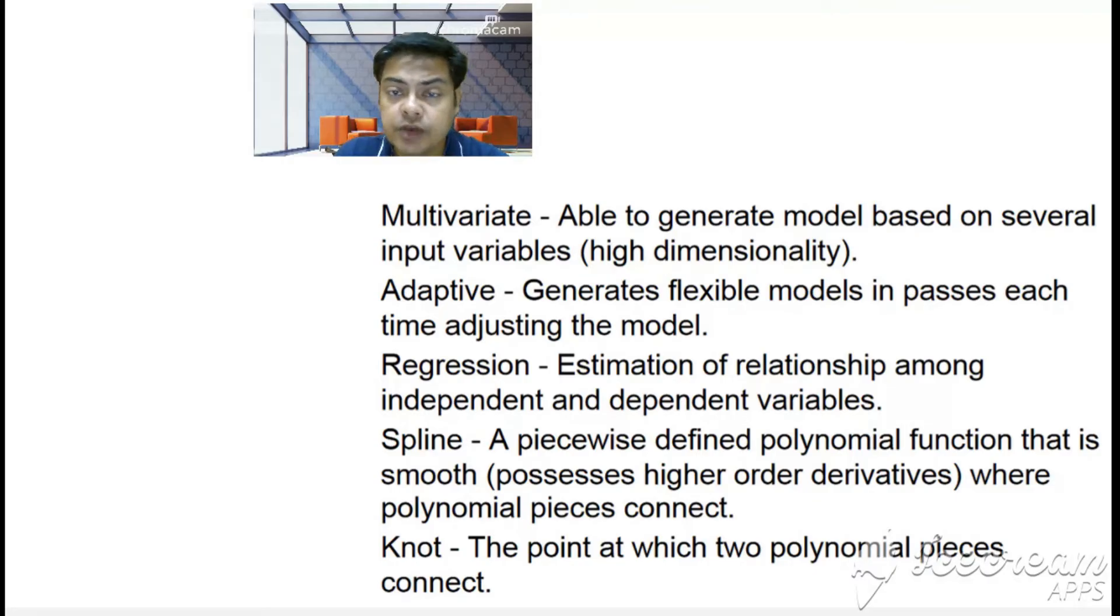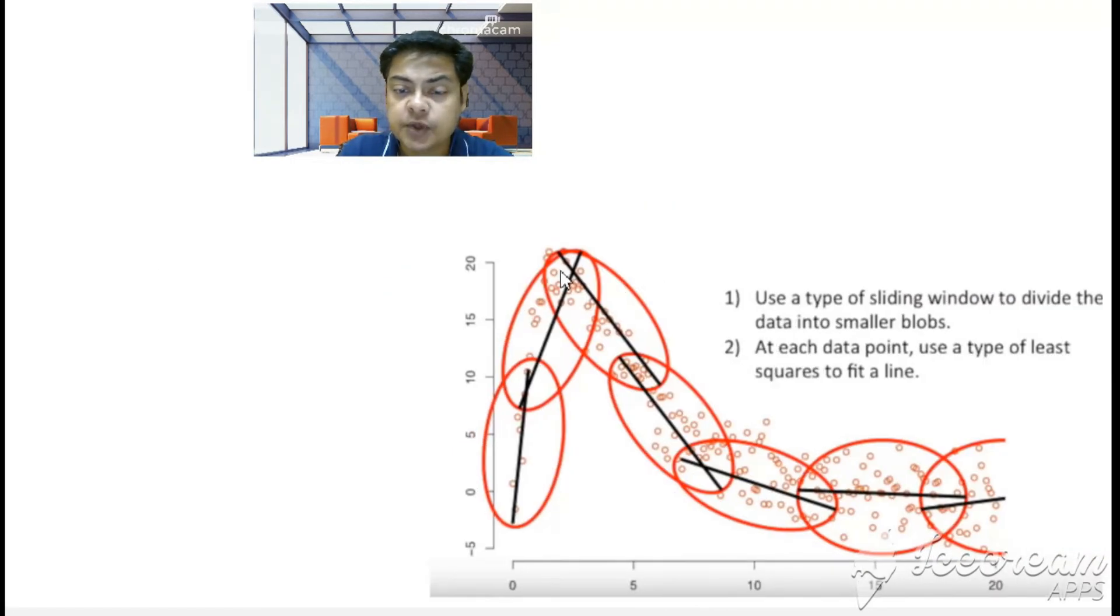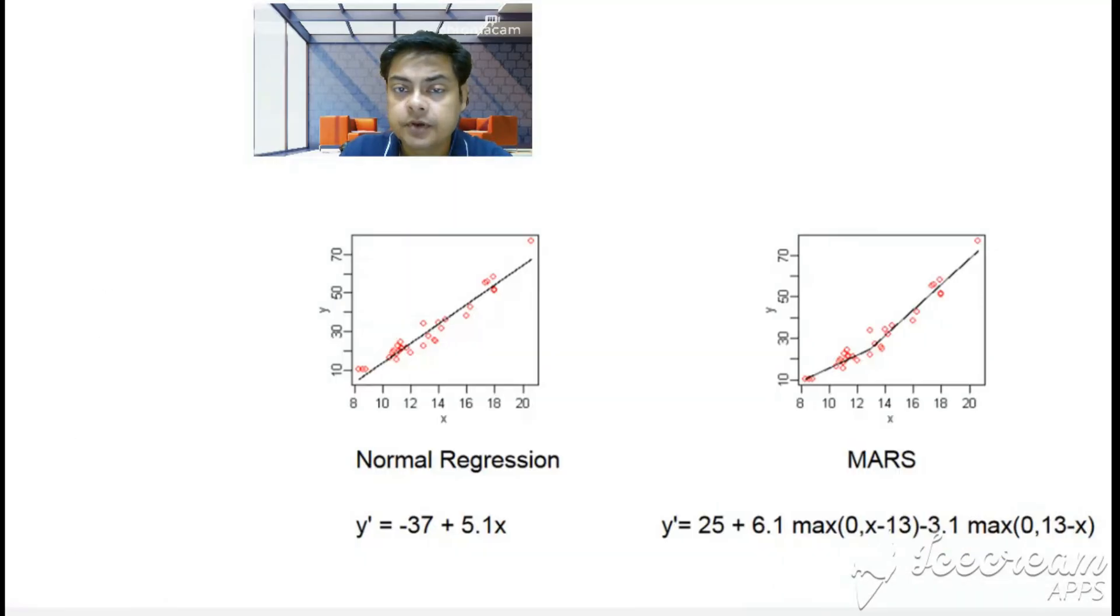I'll just go back to the diagram. Here you can see the connection points: one, two, here there's no connection, it's parallel, three, here also no connection. So there are three knots here you can see.